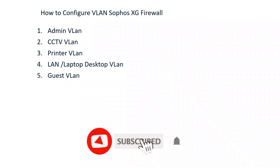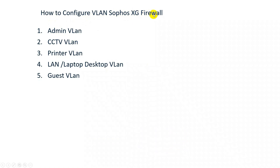Hi friends, welcome to my YouTube channel. Today I will configure VLANs on Sophos XG firewalls and how to relay DHCP on the VLAN. I will create five VLANs: Admin VLAN, CCTV VLAN, Printer VLAN, LAN Desktop/Laptop VLAN, and Guest Network VLAN. I will create three VLAN interfaces and join these interfaces to a DHCP group so they can get DHCP IPs from the Sophos firewall.